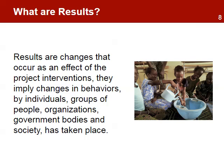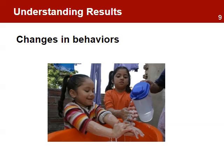Results are changes that occur as an effect of the project interventions. They imply that changes in behaviors by individual groups of people, organizations, government bodies, and society have taken place. They occur as a consequence of project activities — the delivery of goods and services that help beneficiaries achieve the desired results. A change in behavior means beneficiaries are changing their old behaviors. This takes time and is not necessarily automatic once project activities are completed. It requires time to change habits that are sometimes influenced by local customs, culture, and social norms.